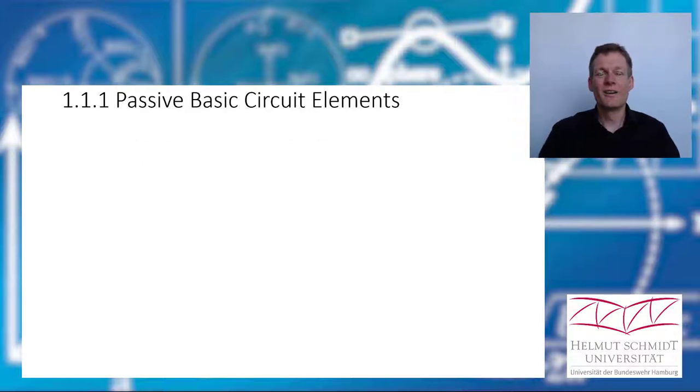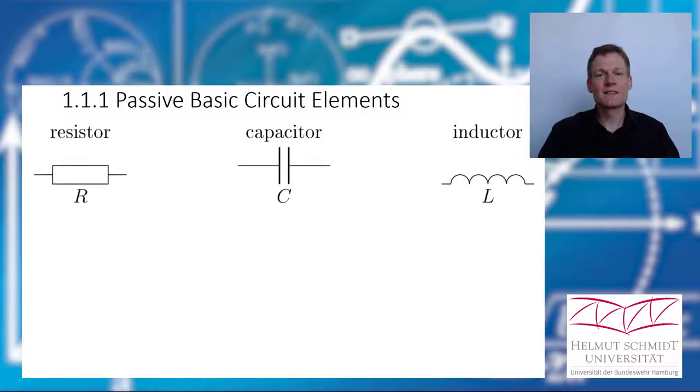Which elements do we have? There are three passive circuit elements: the resistor, the capacitor, and the inductor.